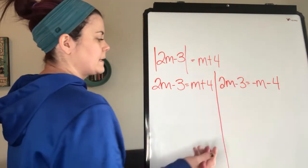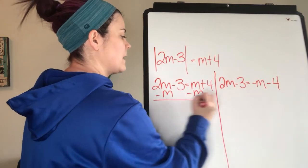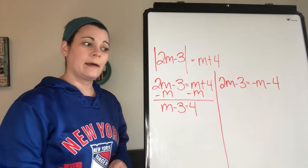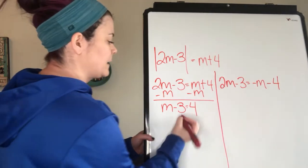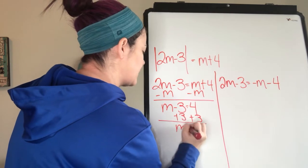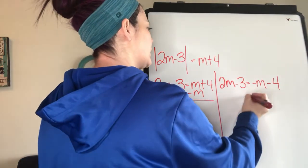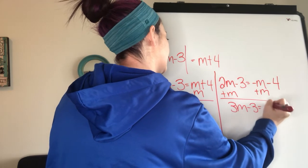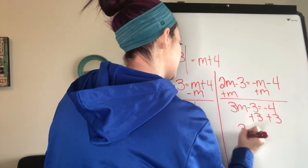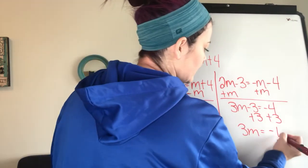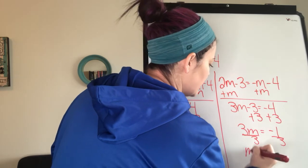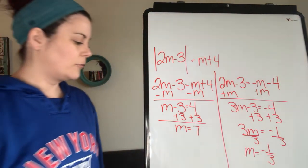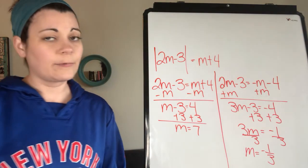Now solve both equations. For the first: subtract m from both sides, then add 3 to both sides — m = 7. For the second: add m to both sides to get 3m − 3 = −4, then add 3 to get 3m = −1, then divide by 3 — m = negative one third. So m equals 7 or negative one third. That is how you solve absolute value equations.